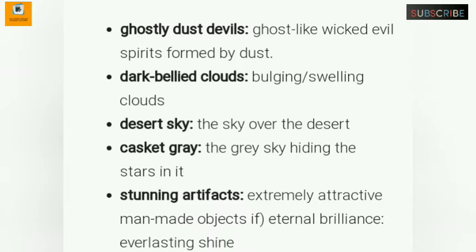Let us try to understand the meaning of each combination. 'Ghostly dust devils' — ghost-like, weak, evil spirits formed by dust. 'Dark bellied clouds' — bulging or swelling clouds. 'Desert sky' — the sky over the desert. 'Casket gray' — the gray sky hiding the stars in it.